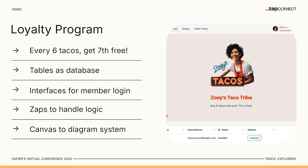The program works like this: when someone buys six tacos from her taco truck, they get a seventh free. They log in and can see all the tacos they've purchased in the past and all the tacos they can redeem in the future. Tables serves as the database to store all that information, Interfaces shows it all — it's sort of like the website for Zoe's Tacos — members can log in, and Zaps handle all the logic in the back end.